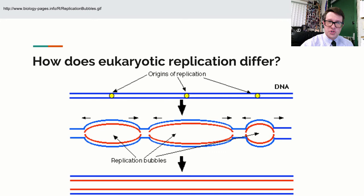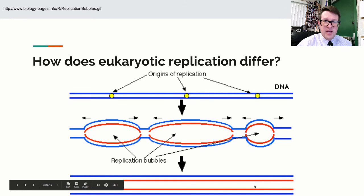We need, because we have so much more DNA, we need to have multiple origins of replication, and the result is we get a whole bunch of bubbles, what we call replication bubbles, which each end of the bubble is a replication fork, until eventually we get extra DNA.